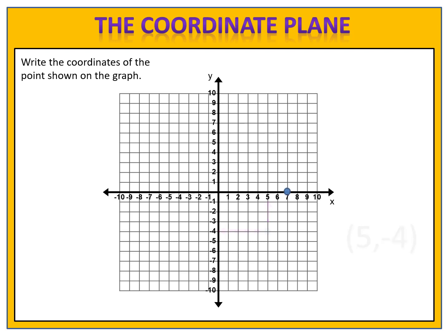Here's another example. This time we have a point that is on the x-axis. We begin by looking at the x — the x is 7. How high is the point? It's not high at all; in fact, it's right on the axis, it's at 0. The coordinates of this point are 7 comma 0.